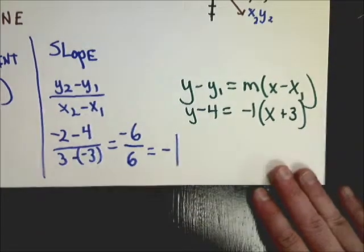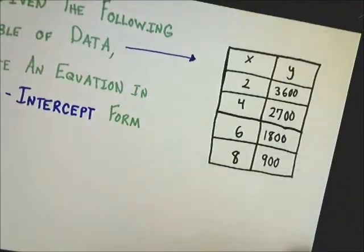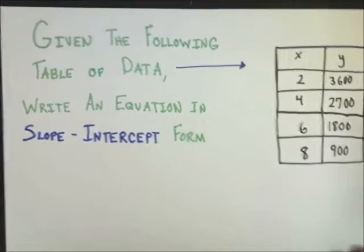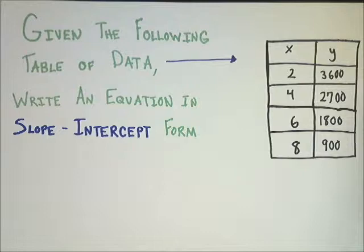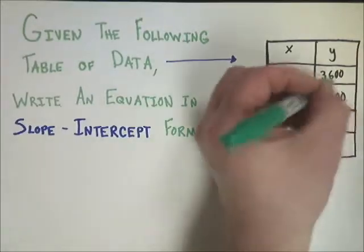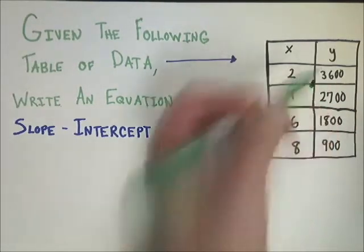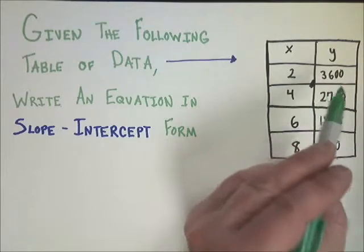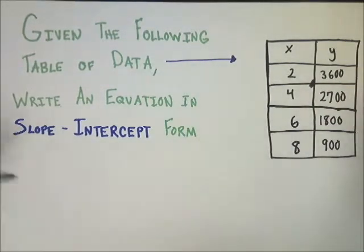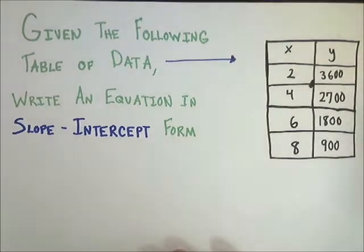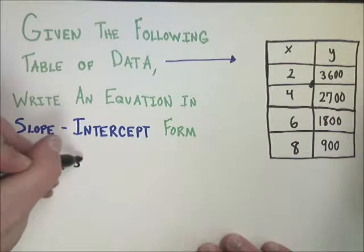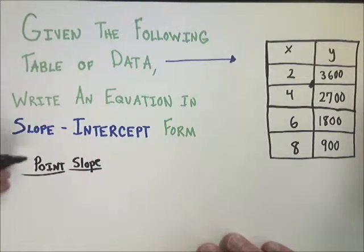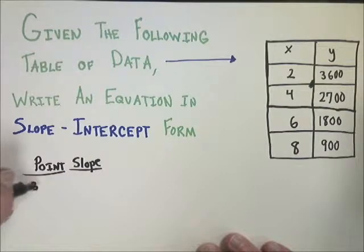And the last type that you're very likely to see is because they love them some tables. Given the following table of data, write an equation in slope intercept form. Now, in this case, it asks for slope intercept form, but we don't have an intercept because unless you want to graph all this, which is craziness. But you do have lots of points because it's almost like here is your comma. So 2 and 3,600 is a perfect point to use. So since I need to convert it into slope intercept form, first thing I'm going to do is put it into point slope form.